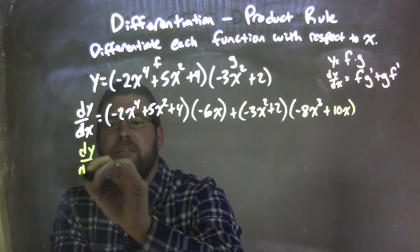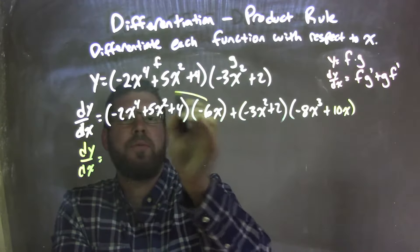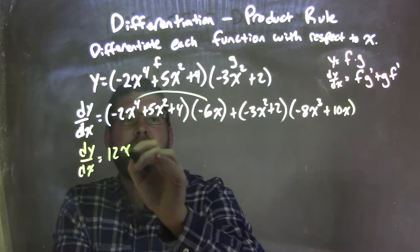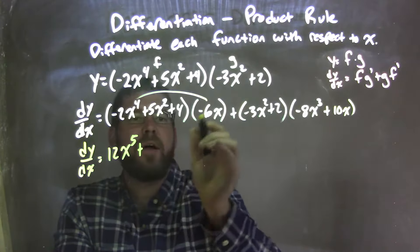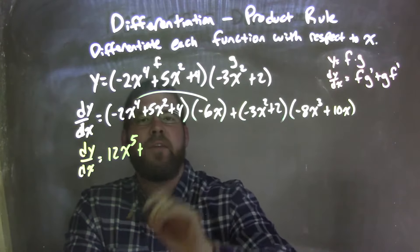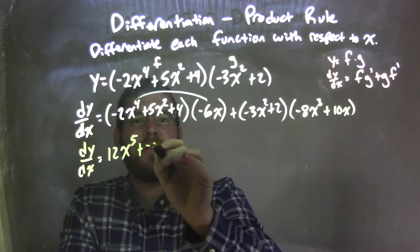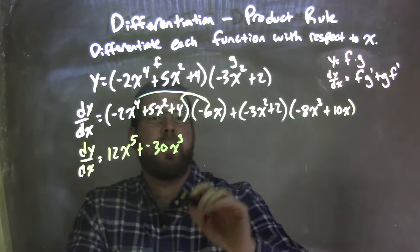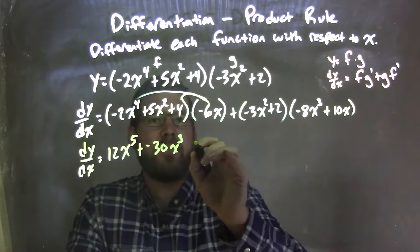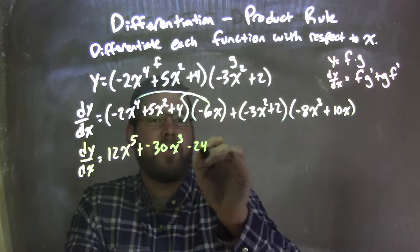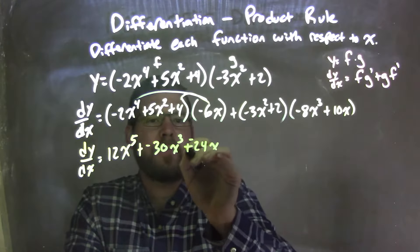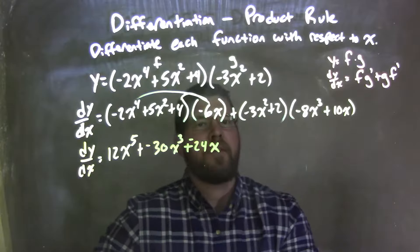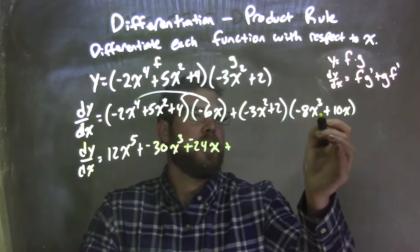So we have dy/dx is equal to: distributing, negative 6x times negative 2x to the 4th is a positive 12x to the 5th, plus negative 6x times 5x squared is negative 30x to the 3rd, and then negative 6x times 4 is negative 24x.